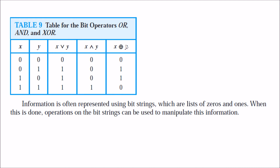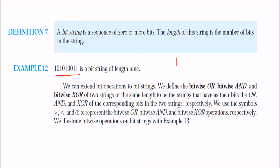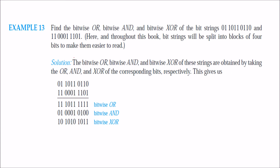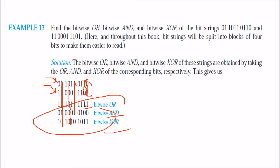What is a bit string? You can have 1-bit, 2-bit, 3-bit strings and so on up to 8-bit and beyond. You can perform bitwise OR, bitwise AND, and bitwise XOR. For example, given two bit strings: OR of 0 and 1 is 1; OR of 1 and 0 is 1. AND is 1 only when both bits are 1 — so 1 AND 1 gives 1. XOR: when both bits are the same, result is 0; when different, result is 1. This is how we perform bitwise OR, AND, and XOR operations.